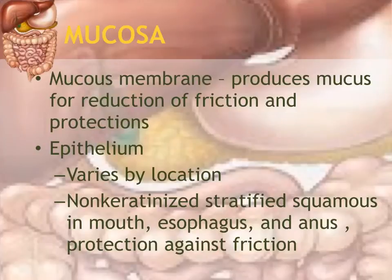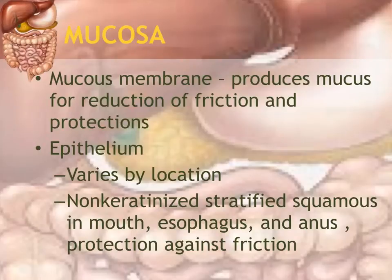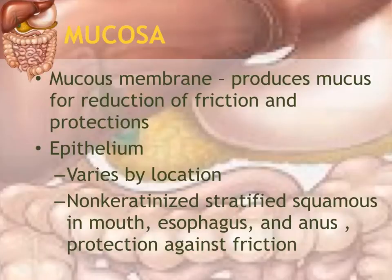The mucosa is another name for the mucous membrane. Its primary job is to produce mucus, which is slimy and reduces friction, allowing food to slip through the GI tract. The epithelium making up the mucosa varies by location — areas like the mouth, esophagus, and anus are made up of non-keratinized stratified squamous epithelium, providing multiple flat layers for protection against friction from food passing through.